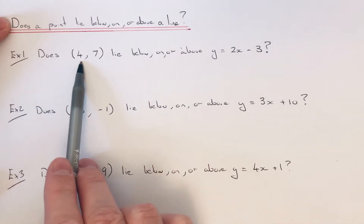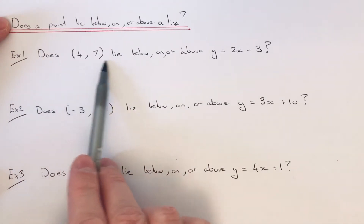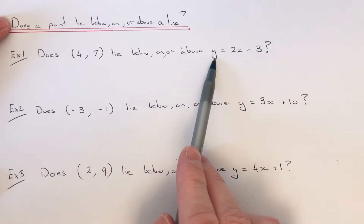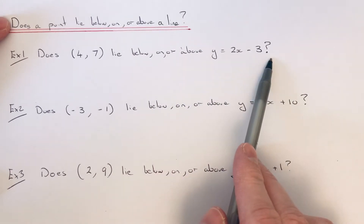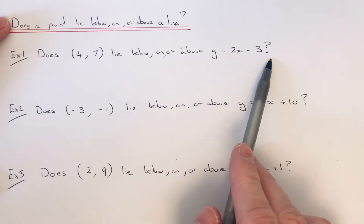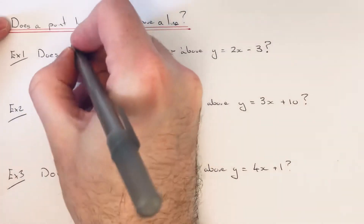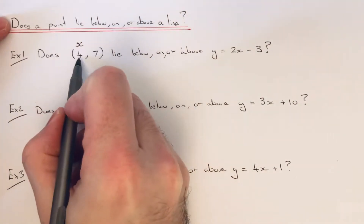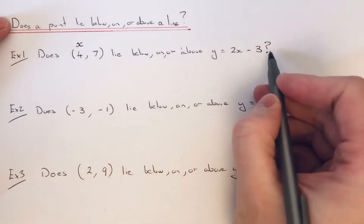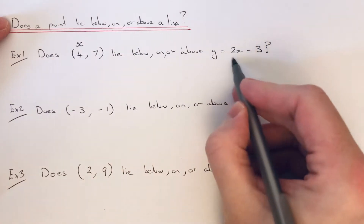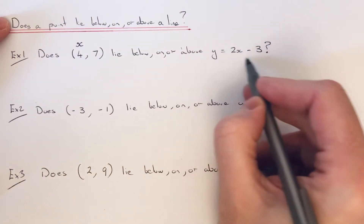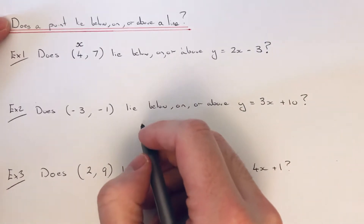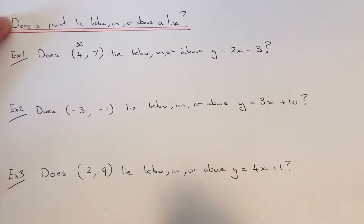Example 1: does the point 4, 7 lie below, on or above the line y equals 2x minus 3? To do this, you substitute the x coordinate, which is 4, into the equation for the straight line, and that will give you the y coordinate that the line is going through.